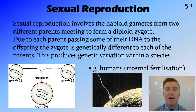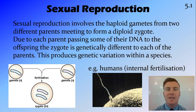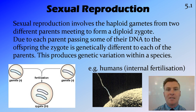Humans undergo sexual reproduction, which is an example of internal fertilization, where the egg is fertilized with the sperm inside the female.